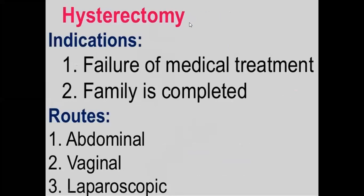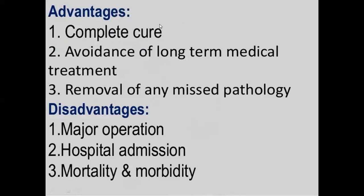Hysterectomy is the radical treatment modality for AUB. Indications are failure of medical treatment, family completed, and the woman does not want to retain menstrual function. It can be done by abdominal, vaginal, or laparoscopic route. Advantages are complete cure, avoidance of long-term medical treatment, and removal of any uterine pathology. Disadvantages are it is a major operation with risks, complications, anesthesia required, hospital admission, and higher mortality and morbidity compared to conservative methods.